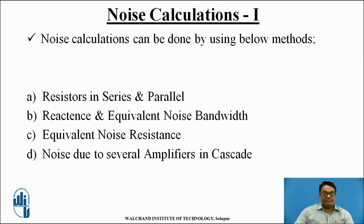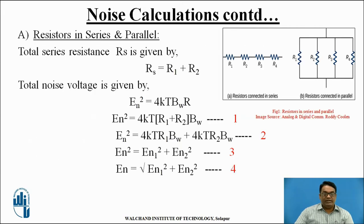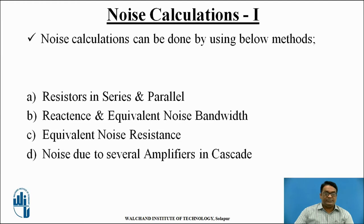So, noise calculations. Whenever noise gets introduced in a signal, we need to find out how much percentage of the noise has affected the main information signal. This can be done by using the following methods: first, resistors in series and parallel; second, reactance and equivalent noise bandwidth method; third, equivalent noise resistance; and fourth, noise due to several amplifiers connected in cascade.